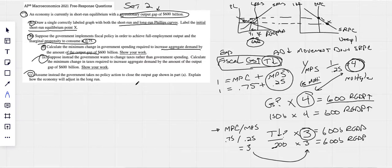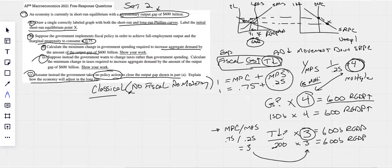Number C, assume instead the government takes no policy actions to close the gap. Explain how the economy will adjust in the long run. So this is what we call that classical view. No policy actions means no fiscal and no monetary policies. So there's no fixing it with monetary or fiscal policy. We're just thinking of the classical view. In essence, hands-off government, what happens? So let's just draw it out here. It's easier to draw and make sense of it and talk about it and explain it.